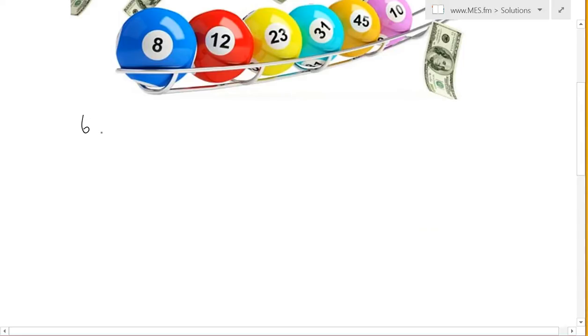So, in order to calculate that, we take the 6, which is how many we've picked, and we divide it by the total of 49. That's the chance of the first ball being the right one.